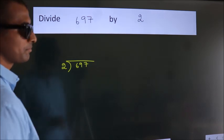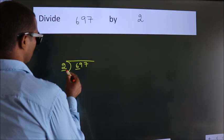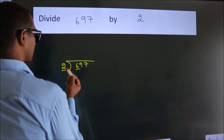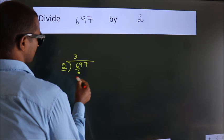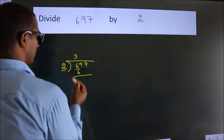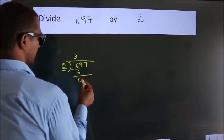Next, here we have 6, here 2. When do we get 6 in the 2 table? 2 times 3 is 6. Now we should subtract. We get 0.